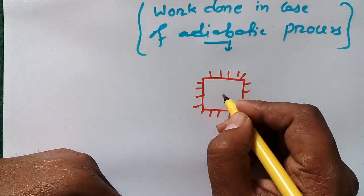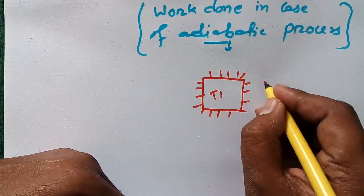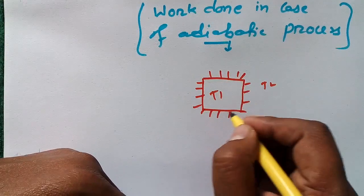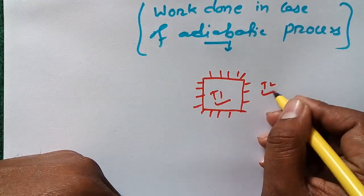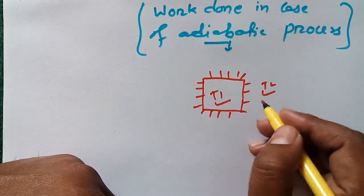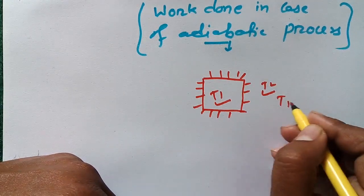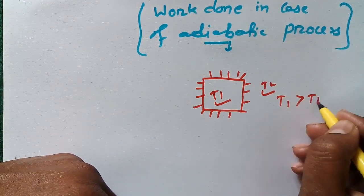Suppose that we have a tank and the boundary is insulated. Inside this tank we have temperature T1, and outside this tank is the surrounding temperature T2. Suppose we have the condition T1 is greater than T2.